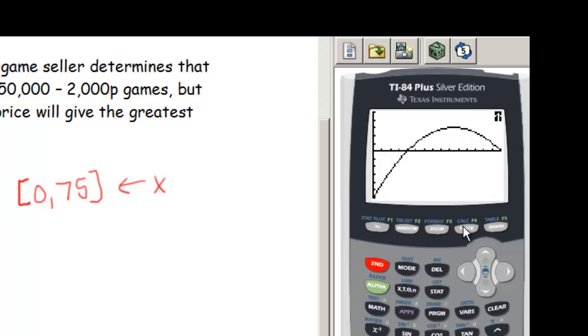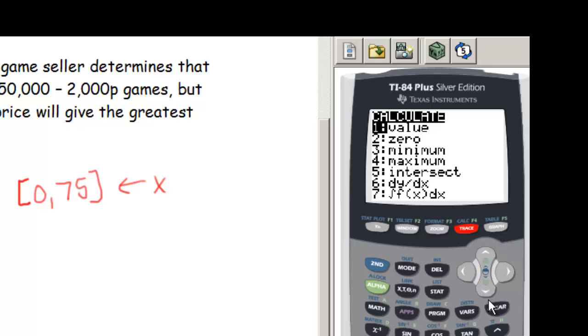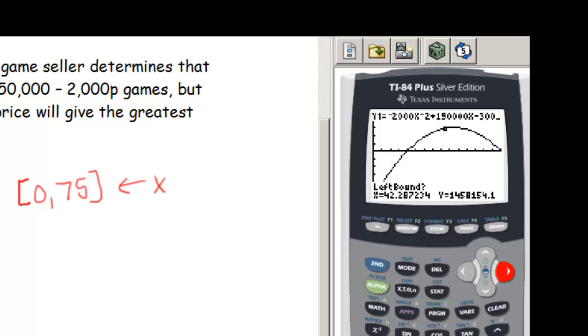Let's find that max - second trace. We're going to choose maximum. It asks us for a left bound, so go to the left of the max, press enter. It asks us for a right bound, so make sure you're to the right of the max, press enter.